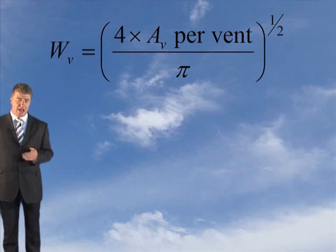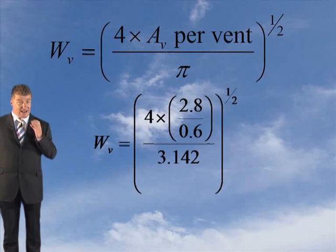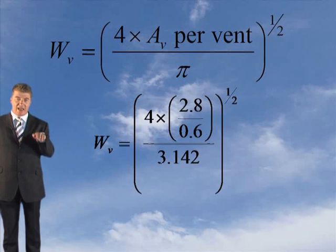When you put this into your formula, your WV formula should have got this. WV equals 4 times 2.8, which is your aerodynamic free area, you need to divide that out by the coefficient to get your geometric free area.